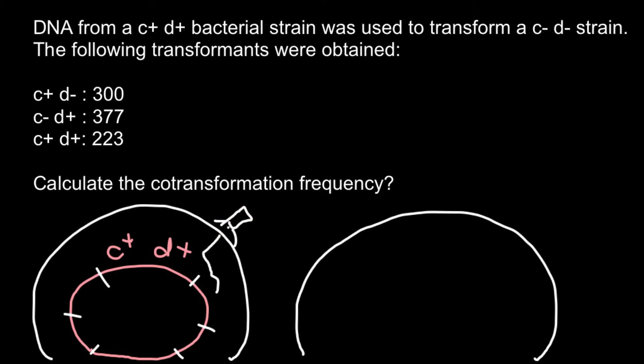But what is going to happen is that when this bacterial cell would burst because too much bacteriophage would be produced, one of such bacteriophages would attach to the surface of another cell. It would be the same bacteria, same strain, but whose genome can be slightly different. For example, for the gene C, this bacteria may have different allele C-negative, and for the D-positive that we can find in this bacteria, this bacteria may have D-negative.